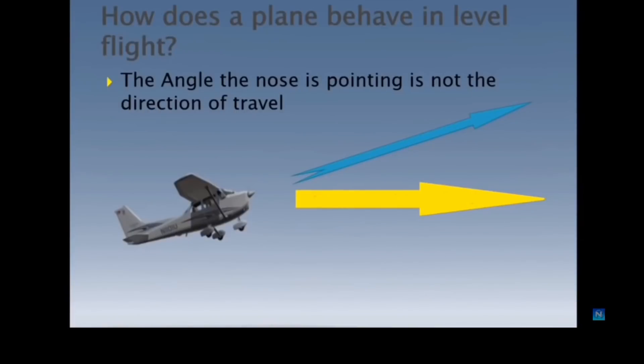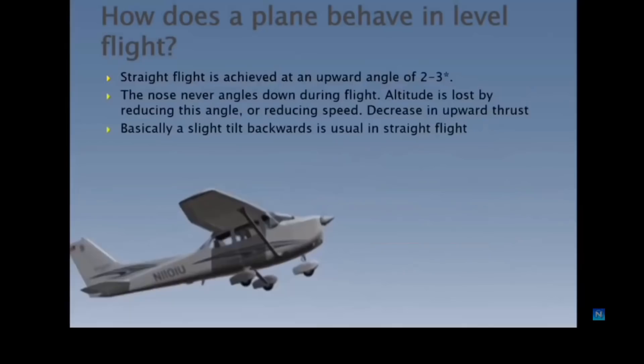So the first thing is to ask, how does a plane behave? And unlike a car, a plane is very different. The front of the vehicle isn't pointing in the direction of travel is the first consequence, and that is basically a consequence of how planes work.